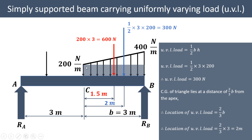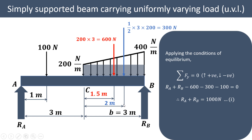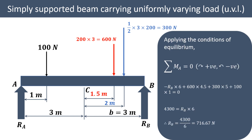We already have a point load of 100 Newton acting at a distance of 1 meter. In totality, we have the 100 Newton point load as is, the UDL of 200 Newton per meter converted into a point load of 600 Newton acting at 1.5 meters, and the UVL of 300 Newton acting at a distance of 2 meters from point C. These are all the loads acting in this system.